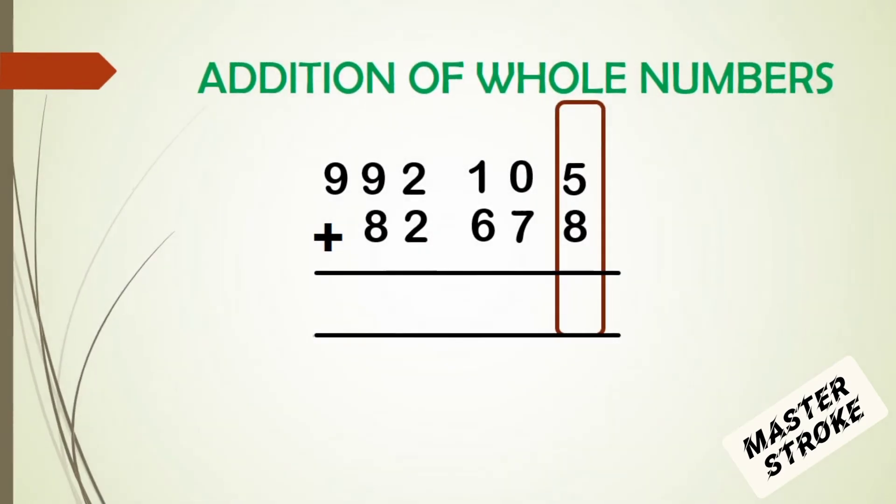We start with the ones. 5 plus 8 gives us 13. So we'll have 3 in the ones place and 1 in the tens place. We cannot keep 1 in the tens place because there are other digits in the tens place which have not been added. So we carry 1 to the top.